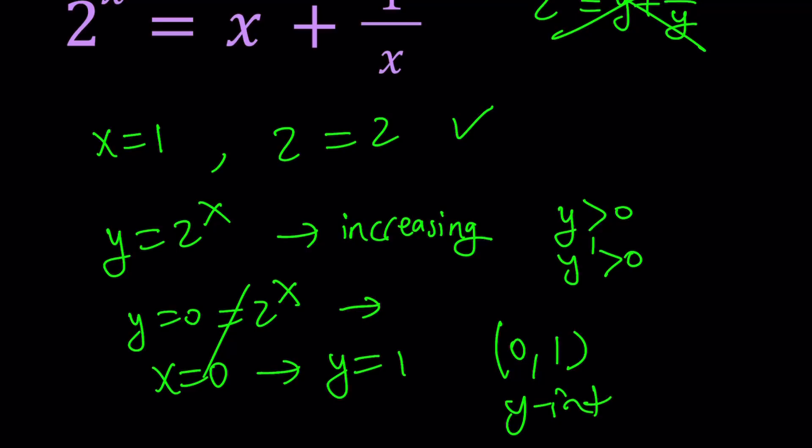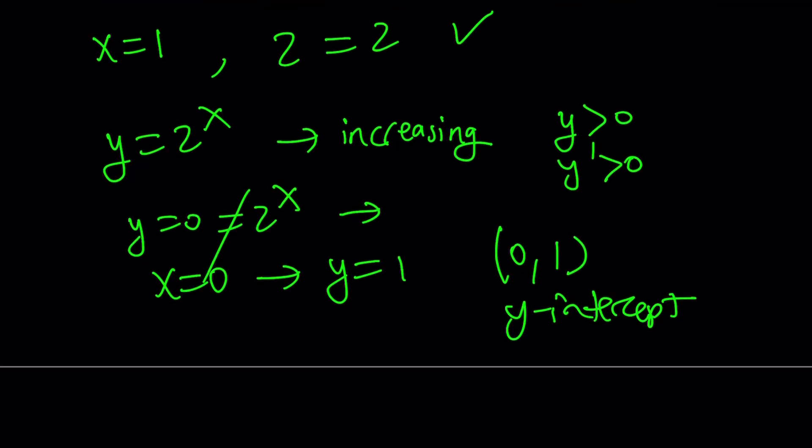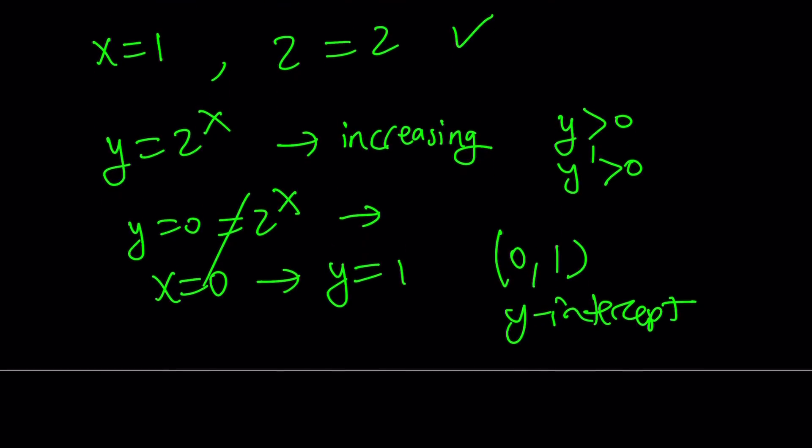And the answer is yes, because if you replace x with 0, then you're going to get y equals 1. So 0, 1 is going to be a y intercept for this function. So that kind of gives us a little bit of idea about this function: increasing, always positive, and it has a y intercept. So with this type of information, you can roughly graph it.